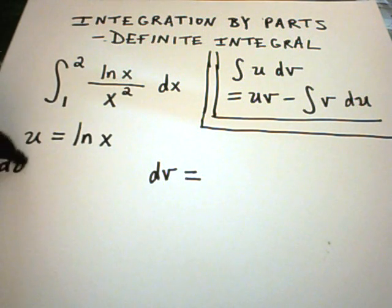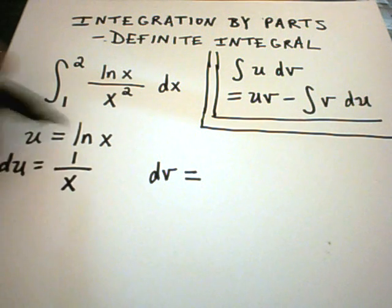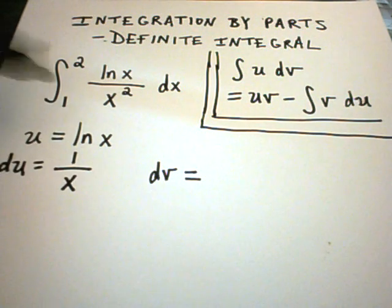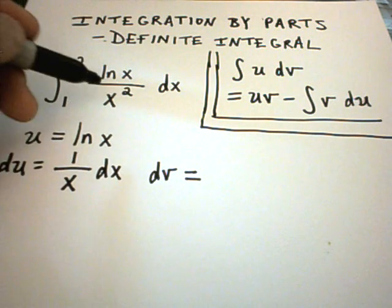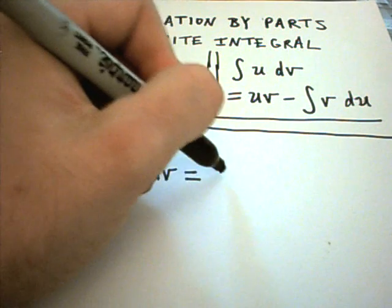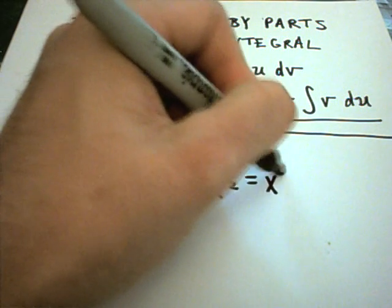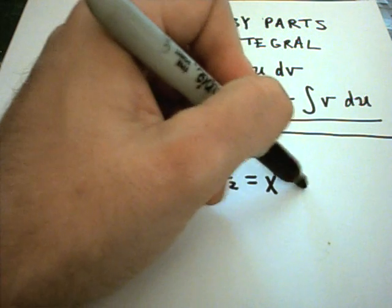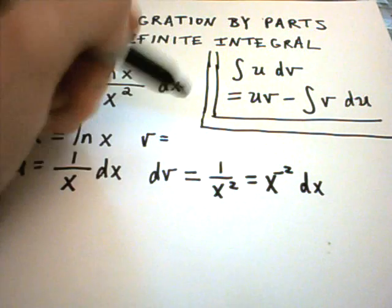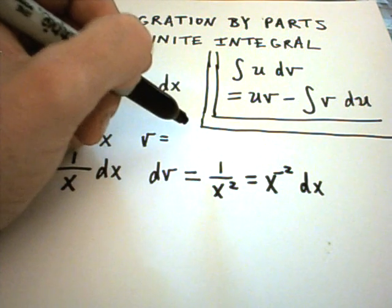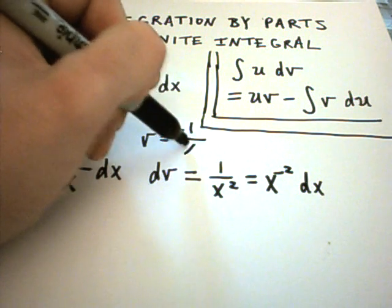So I'm going to pick u to be ln of x. I'll pick du to be, well, not pick, if you use ln of x, du becomes 1 over x dx. That means I'm picking dv to be the 1 over x squared, or x to the negative second, dx term. And if you find the anti-derivative of x to the negative second, we'll get x to the negative first divided by 1, or negative 1 over x.